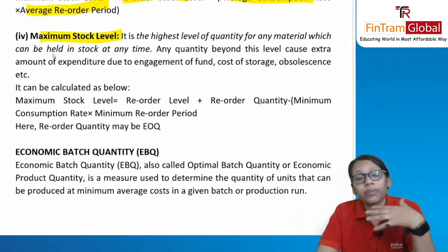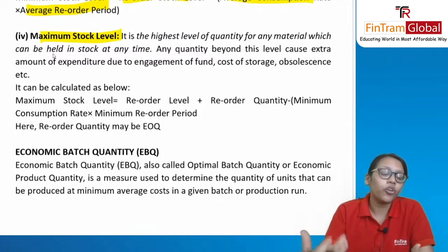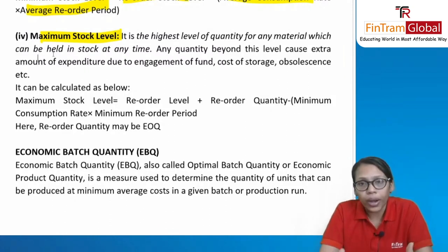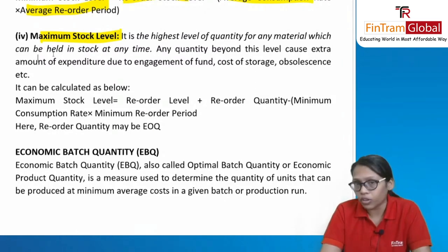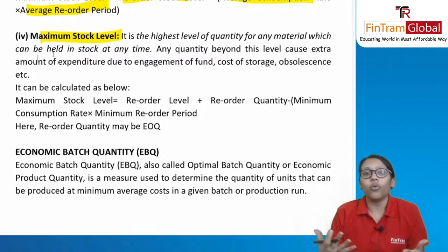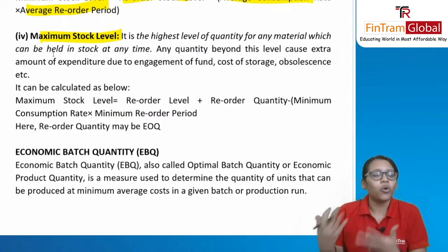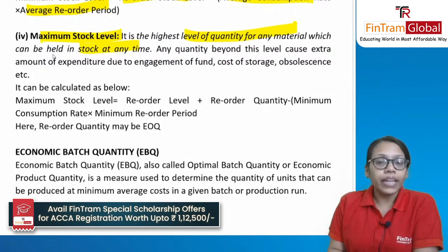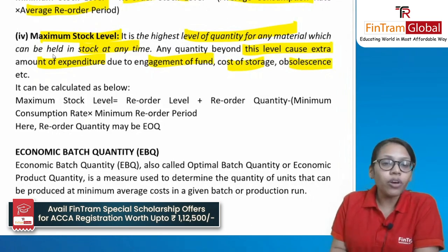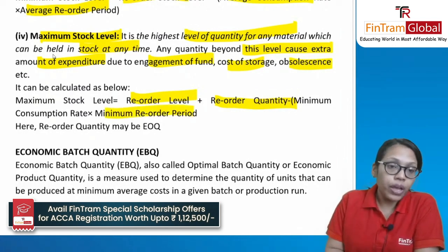Maximum stock level is the maximum inventory to hold at any point — the objective is to prevent overstocking and reduce carrying/holding cost. If not specified, you may hold far more inventory than needed, unnecessarily increasing holding costs. Maximum stock level formula: reorder level + reorder quantity − (minimum consumption rate × minimum reorder period). The reorder quantity is also known as EOQ.